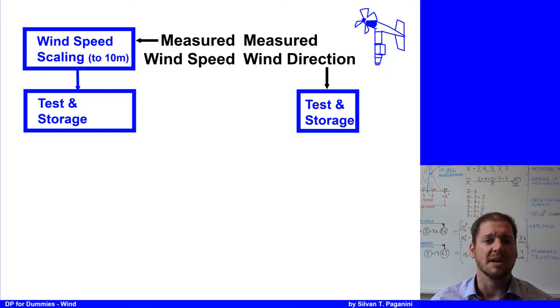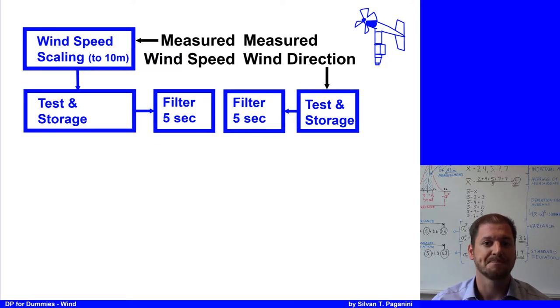The noisy wind measurements need to be filtered. Normally a short filter time of 5 seconds is applied. Some manufacturers however give the DPO the possibility to change the filter time. For a vessel with a good wind model and a well-tuned DP system, this is not required.